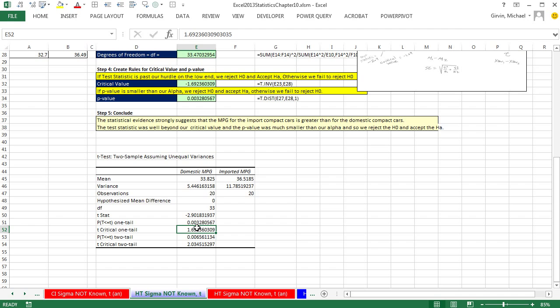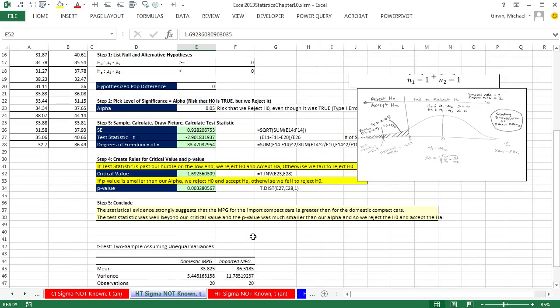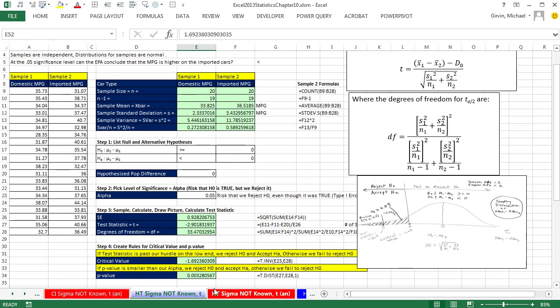So in this video, we talked about comparing the difference between two population means when standard deviation from the population is not known. We saw this automatic two sample assuming unequal variance. And we also saw our formula method. Next video, we'll talk about matched samples or paired samples. All right, we'll see you next video.